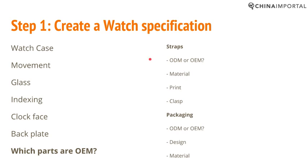What you must cover in a watch spec sheet includes the watch case. For the watch case you have the design — you may use a CAD file, a 3D file, or you can have a physical reference sample. You can even send them a watch and say 'replicate this,' or you can create a 2D drawing, or a 3D printed mock-up. There are many ways to represent the design. As long as you communicate the design clearly, it's fine.